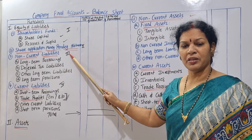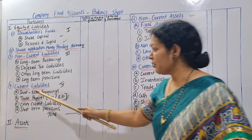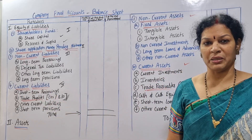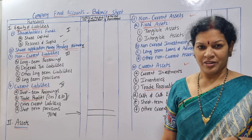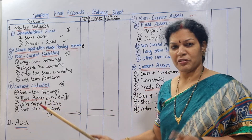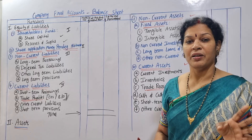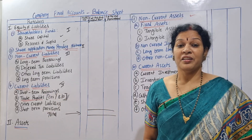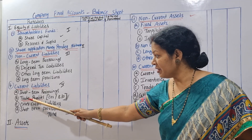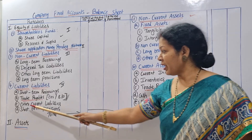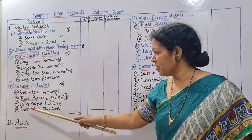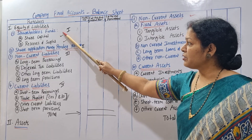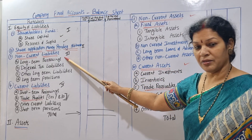How do we choose current liabilities? Current liabilities include short-term borrowings — for example, bank overdraft and temporary borrowings. Then there is trade payables, which means creditors and bills payable. There are also other current liabilities and short-term provisions. If there are long-term provisions, then there are also short-term provisions.